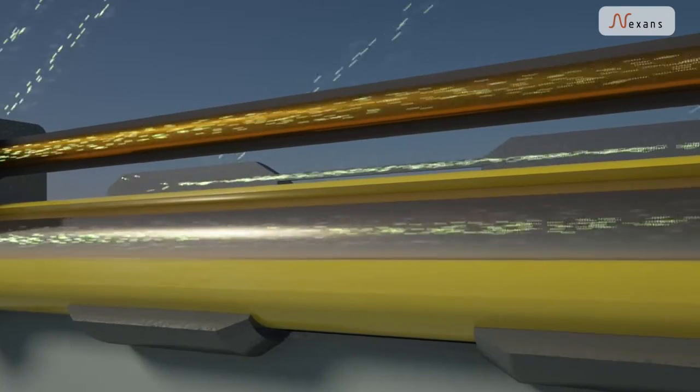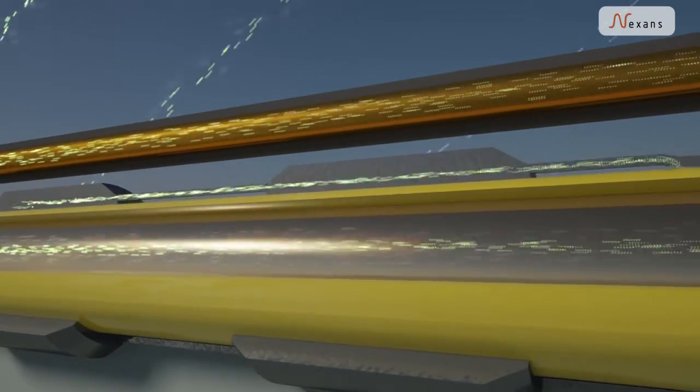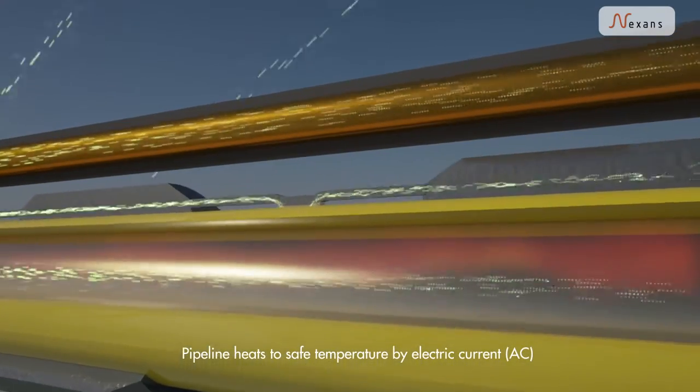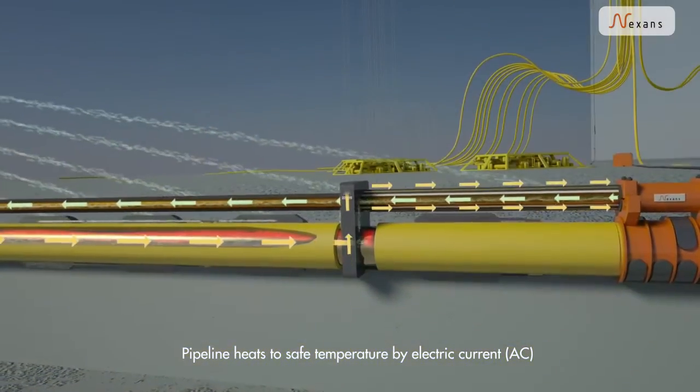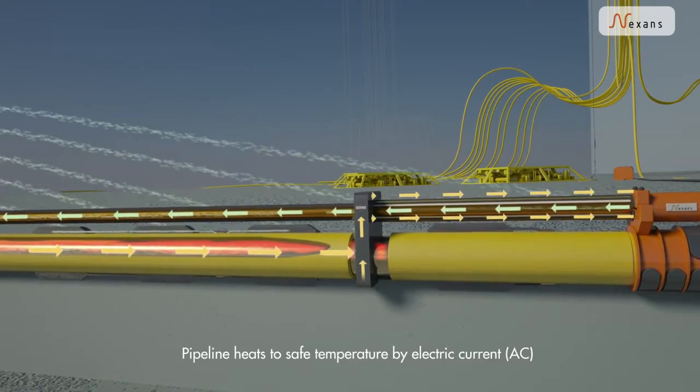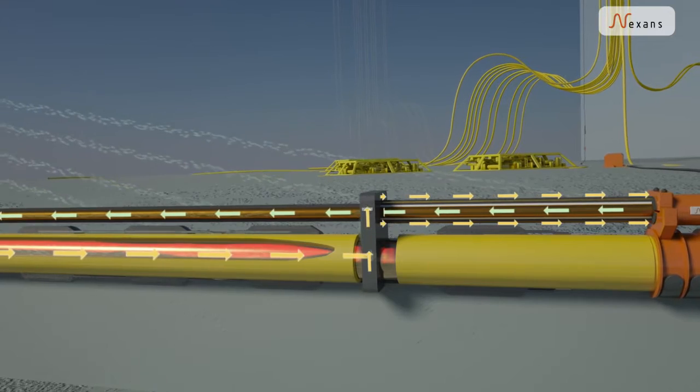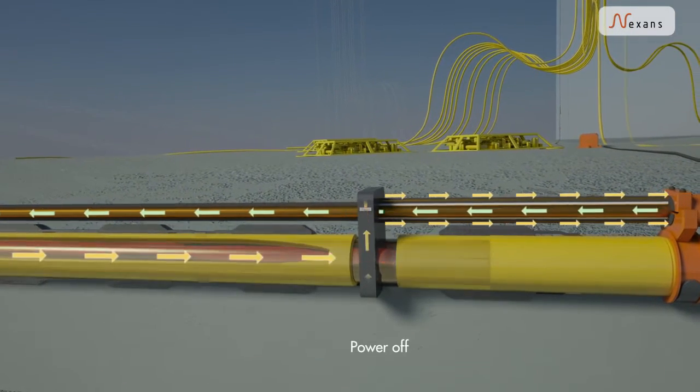Some of the current is allowed to escape through the anodes into the seawater in a controlled manner. At the near end, the currents rejoin the pipeline and return via the riser cable outer element.